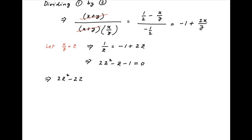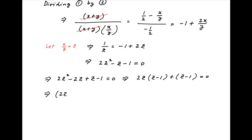This can be written as 2z squared minus 2z plus z minus 1 is equal to 0, or 2z times (z minus 1) plus (z minus 1) is equal to 0. Therefore, z is equal to 1 or minus half.